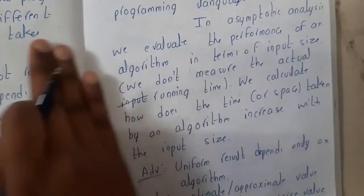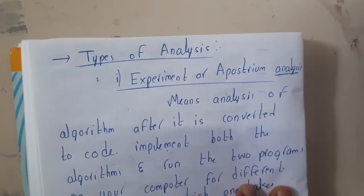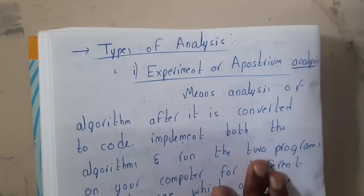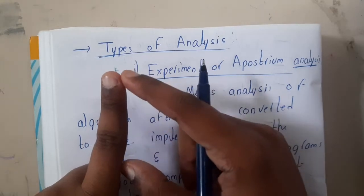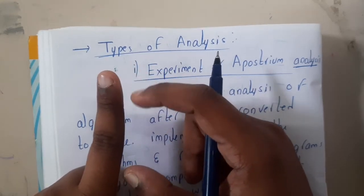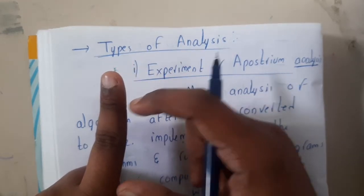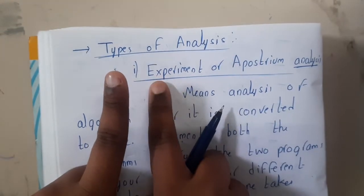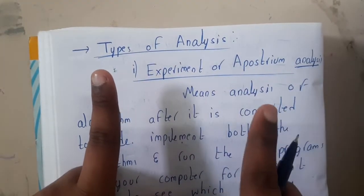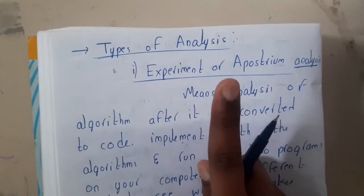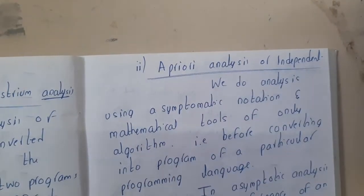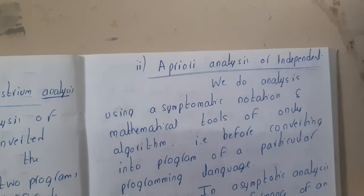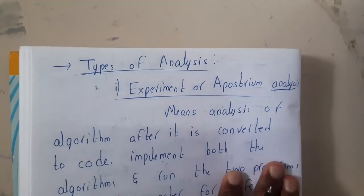Now let us continue with types of analysis. There are two types. The first type: you write the whole algorithm, convert it into code, and then test it. This is called experimental or a posteriori analysis - you need to remember the name. The second type: you test the algorithm directly before converting it into code. This is called a priori or independent analysis. That is the only difference between the two types.